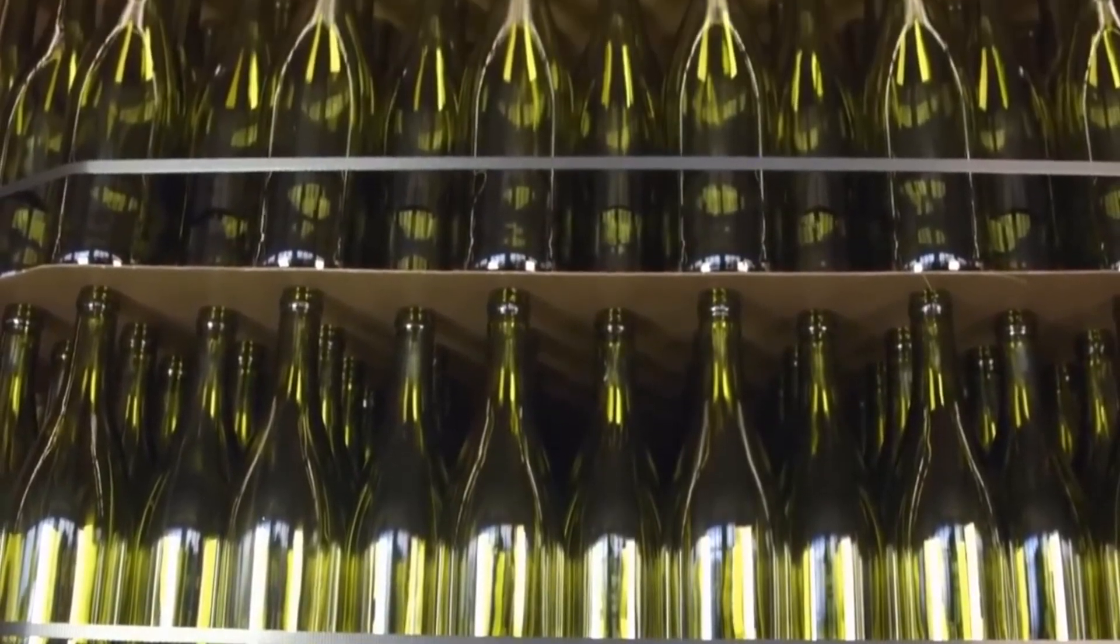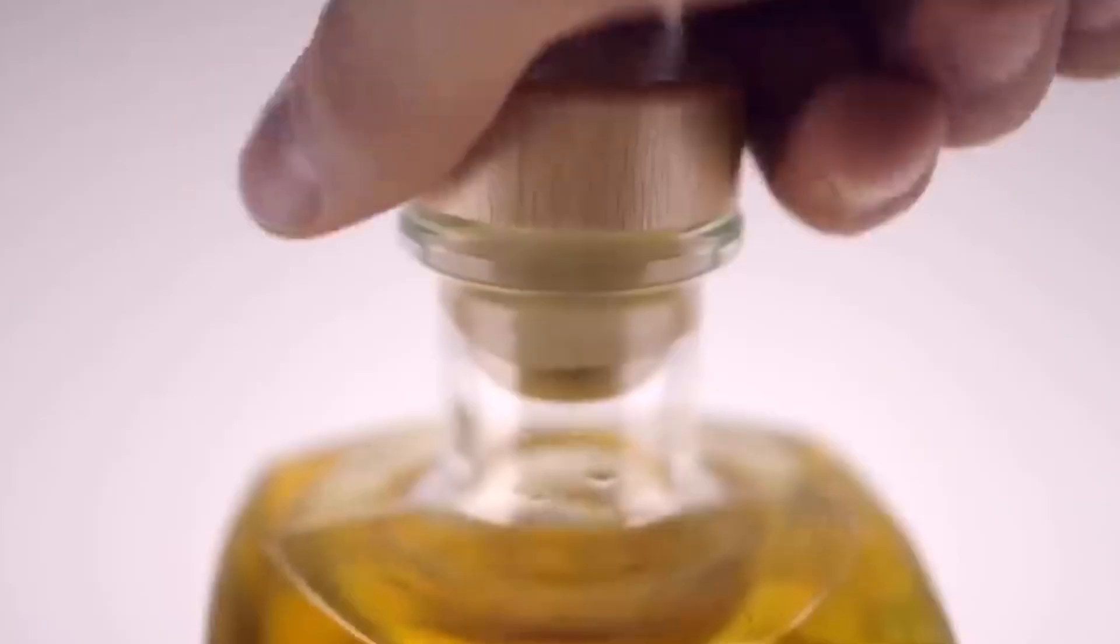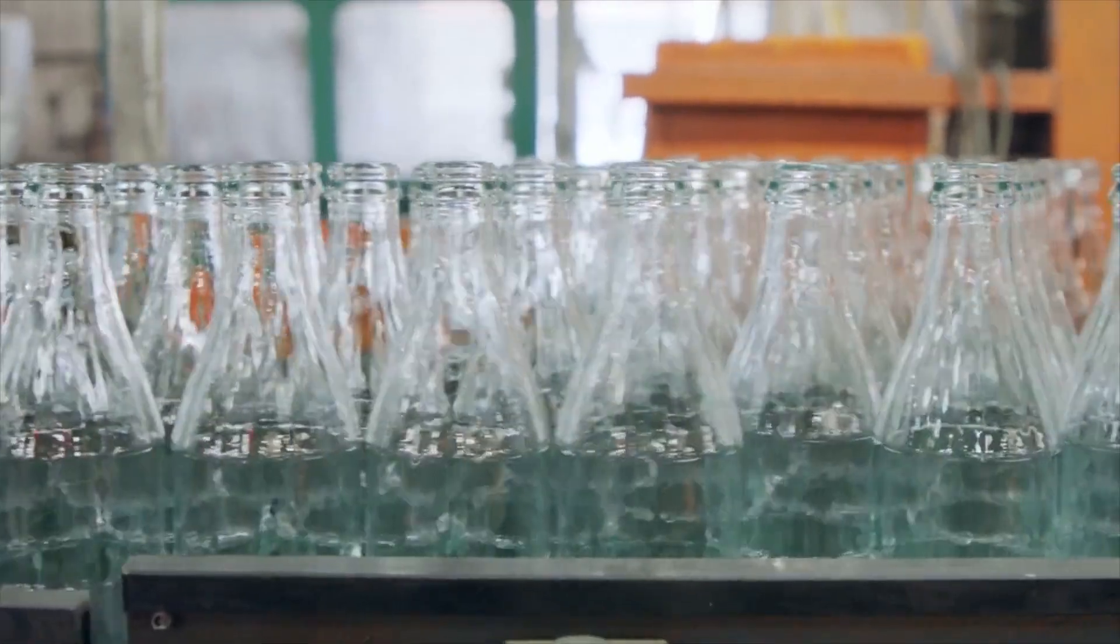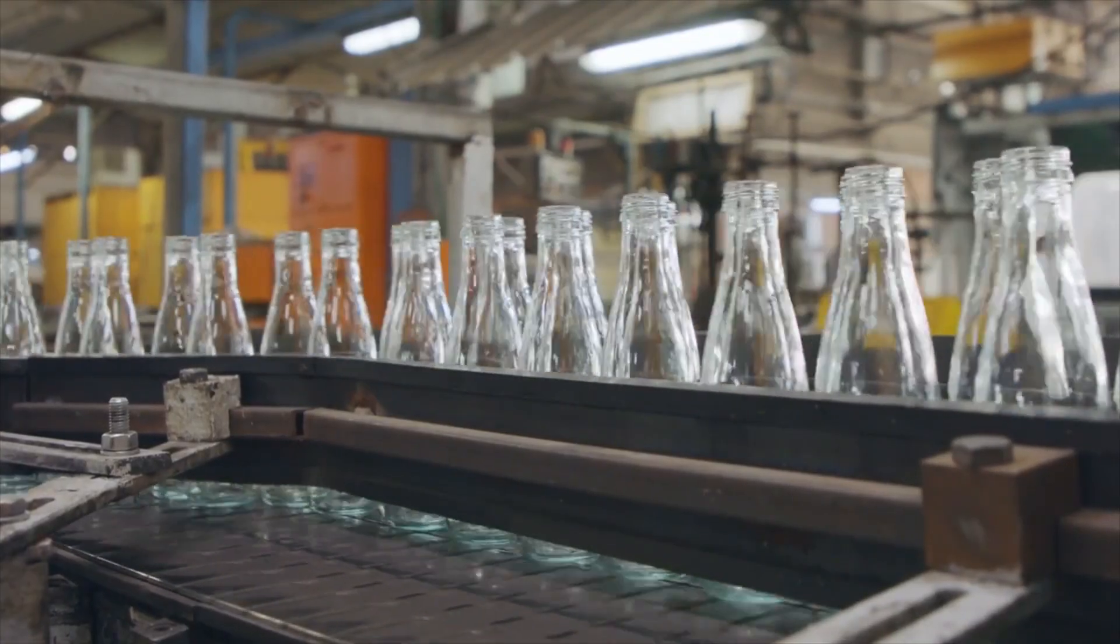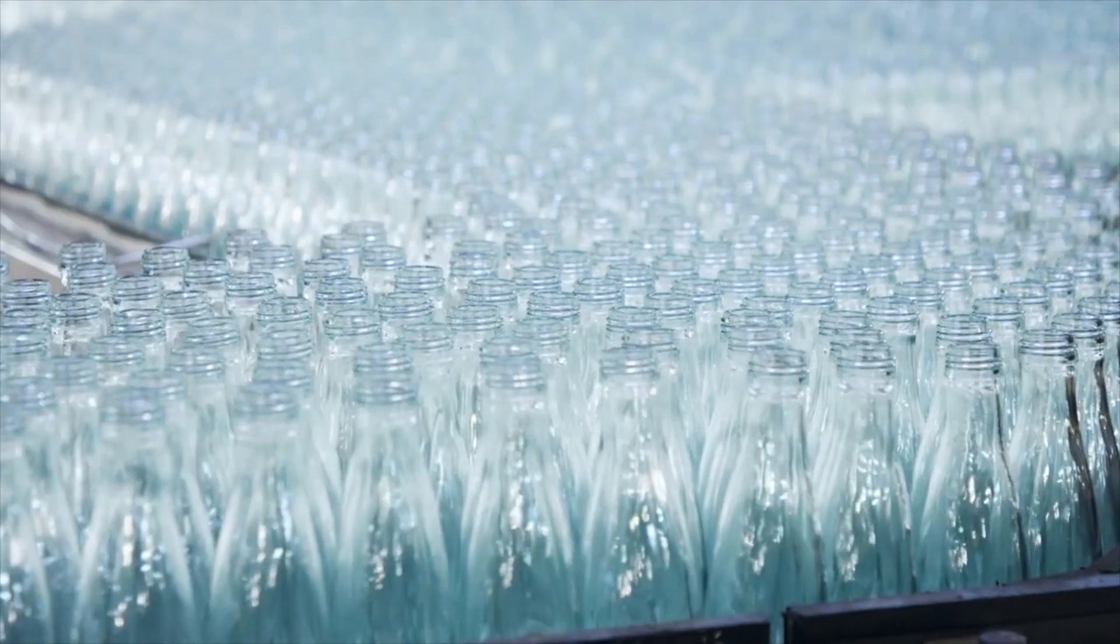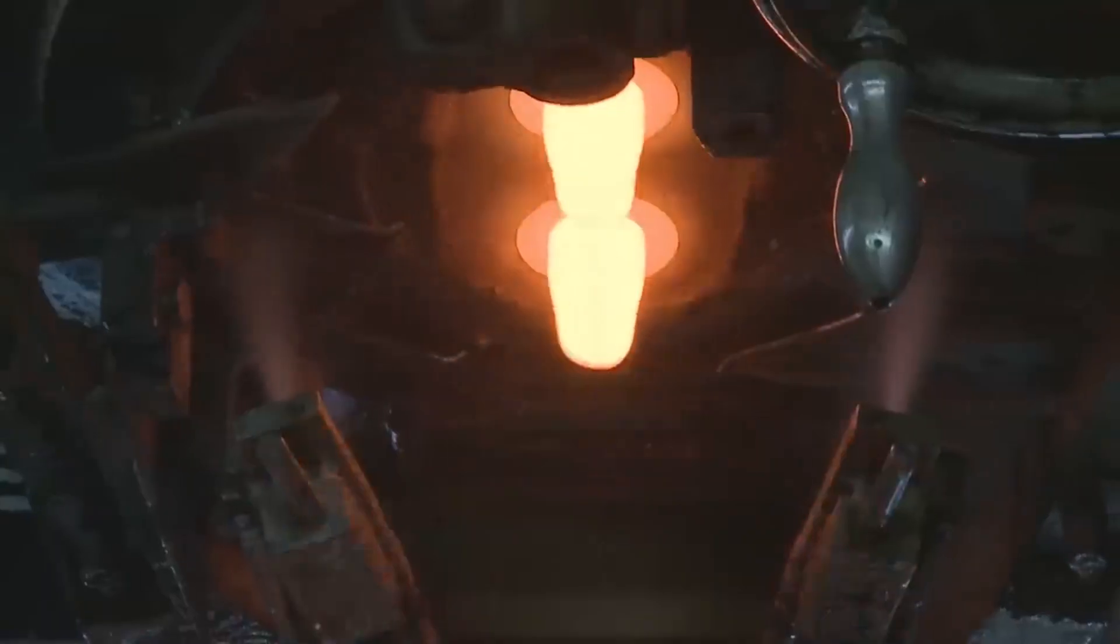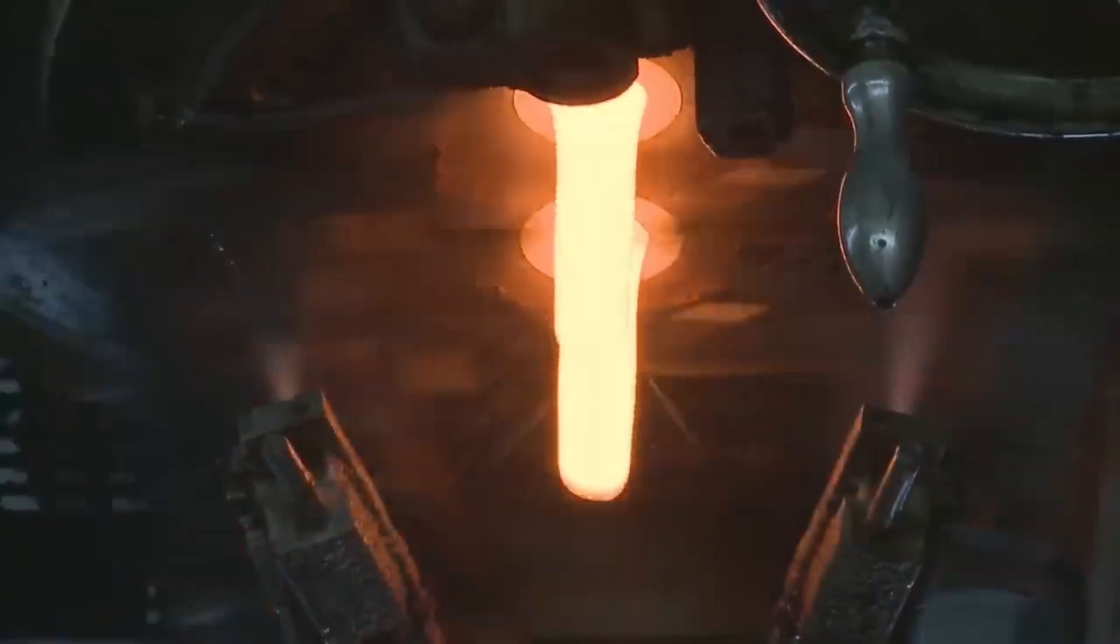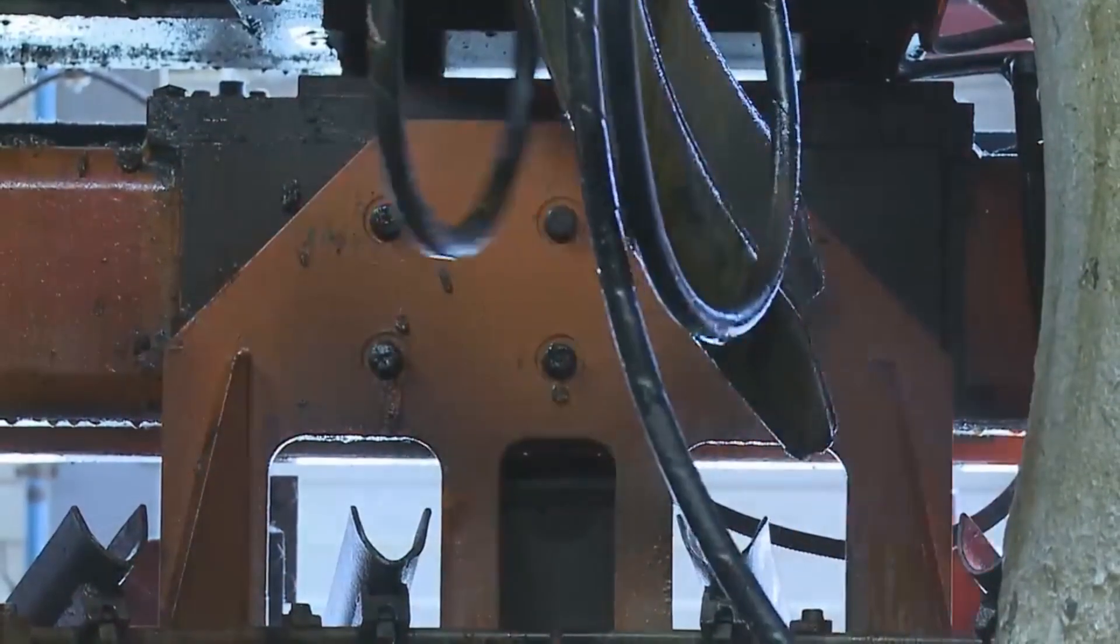We've witnessed the transformation of molten glass into solid bottles, witnessing the precise processes of cooling and annealing. Each glass bottle emerges as a masterpiece of craftsmanship. From the initial gathering of raw materials to the final inspection, every step is undertaken with care and precision. Thank you for joining us on this mesmerizing exploration of how it's made glass bottles. We hope you've gained a newfound appreciation for the artistry and precision behind these everyday objects. Stay curious, keep discovering, and share the magic of glass bottle production with others. Until next time.